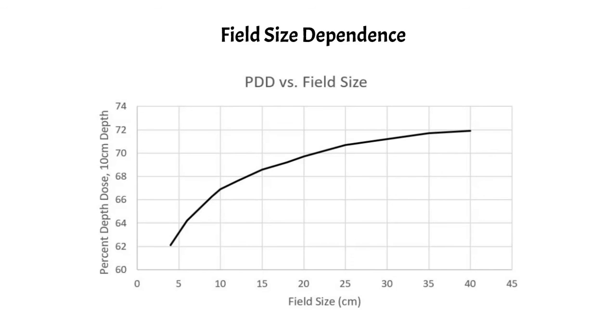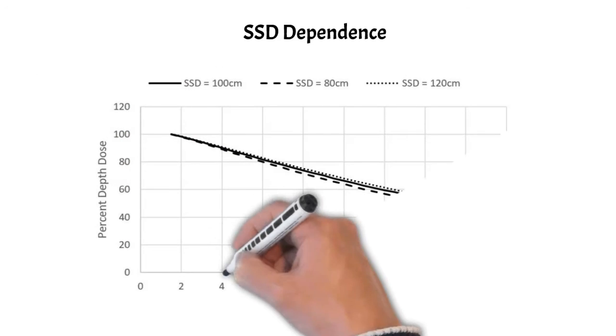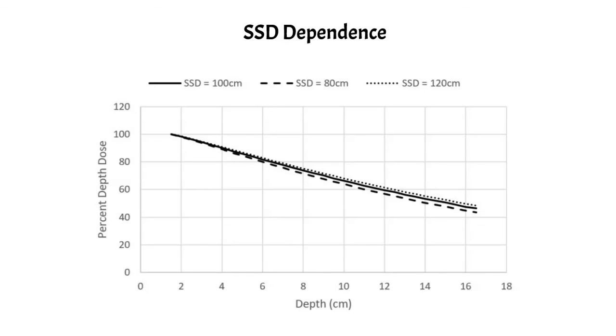Here is a plot that shows the dependence on SSD. You can see the PDD for three different SSDs: one is at 100, one's at 80, and one's at 120. You can see that the extended SSD is actually higher and the decreased SSD is actually lower. The effect is pretty small, like the PDD is not shifting very much here, but there is a noticeable shift in the PDD as a function of SSD.